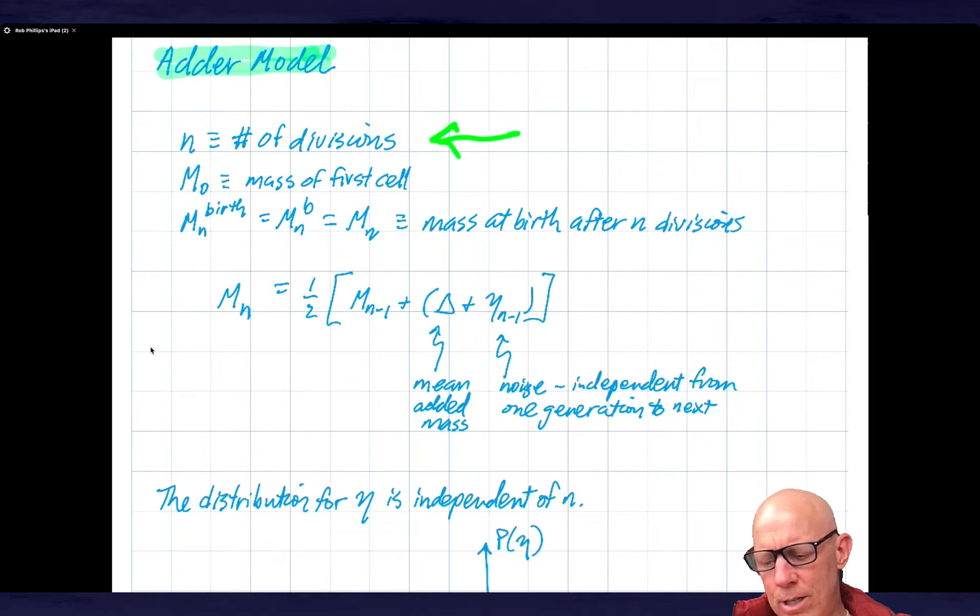n is the number of divisions, m0 is the mass of the first cell, and mn birth is the mass at birth after n divisions. The recursion formula is given here. The mass in the nth cycle is one half the mass at division. The mass at division is the mass at n minus one birth, plus the adder delta, the mean amount of mass added per cell division, and a noise term which tells us about the fluctuations in the added mass.